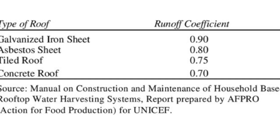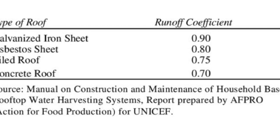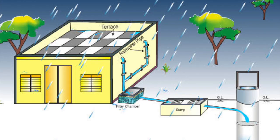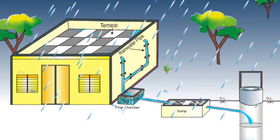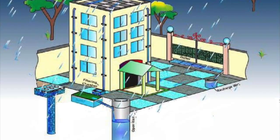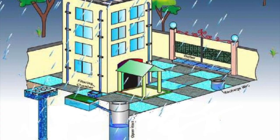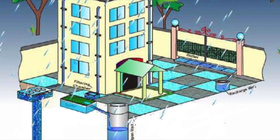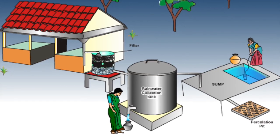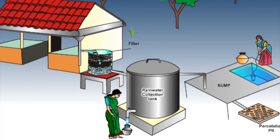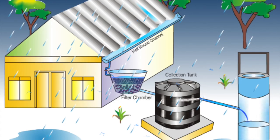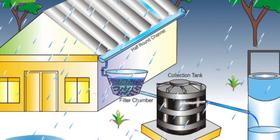Roof type and runoff coefficient: For a concrete roof it is 0.70, for an iron or metal sheet roof it is 0.90, for a tile roof it is 0.75, and for an asbestos sheet roof it is 0.80.